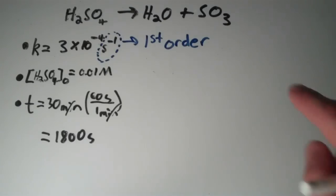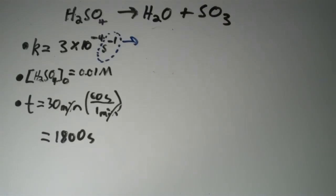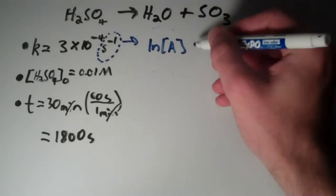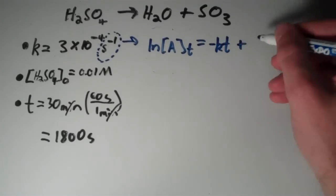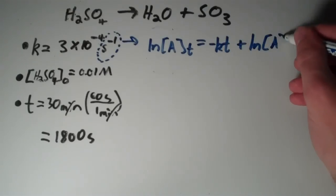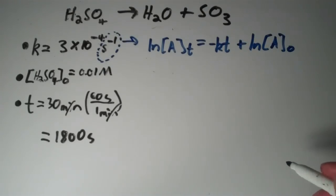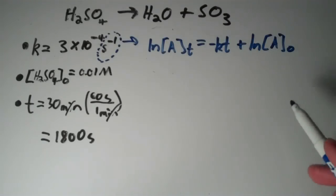The first-order integrated rate law says that the concentration at time t and the initial concentration are related as follows: the natural log of the concentration of A at time t equals negative kt plus the natural logarithm of the initial concentration A sub zero. We can say that A is equal to H2SO4 because there's only one reactant, so this integrated rate law applies to our chemical equation.